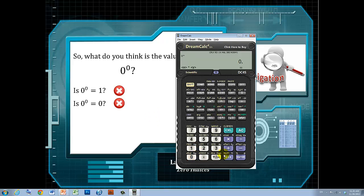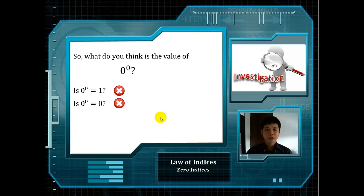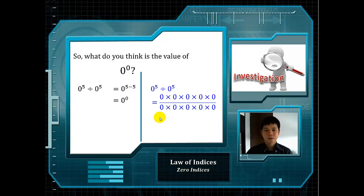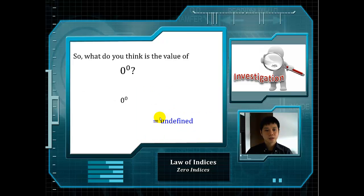0 to the power of 0 is actually undefined. You may ask why. Consider 0 to the power of 5 divided by 0 to the power of 5. Using the law of indices, we have 0 to the power of 5 minus 5, which gives us 0 to the power of 0. However, using direct calculation, can we cancel out the common terms? The answer is no, because anything divided by 0 is undefined. Hence, 0 to the power of 0 is undefined.